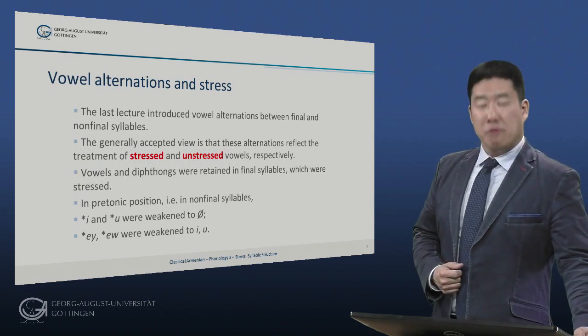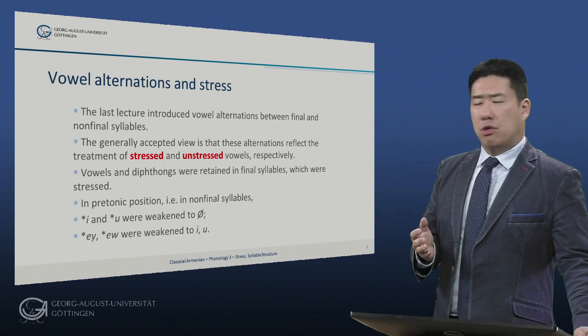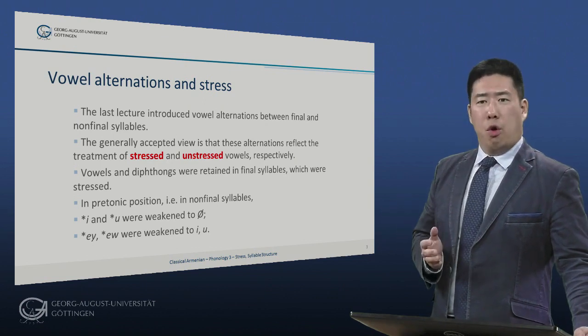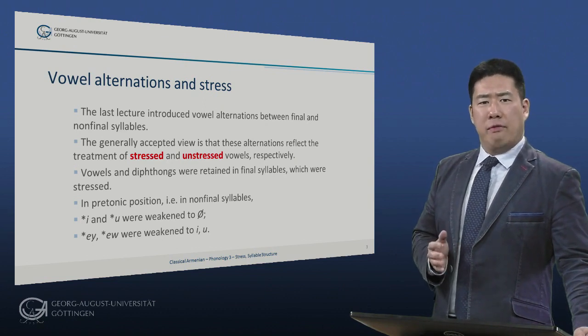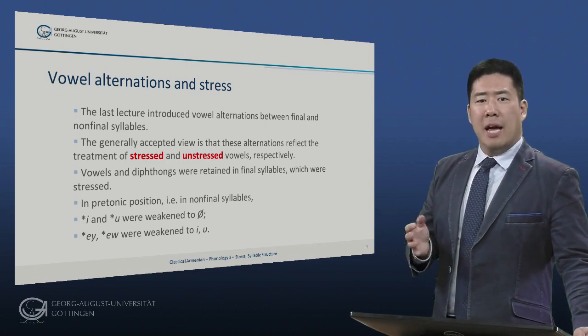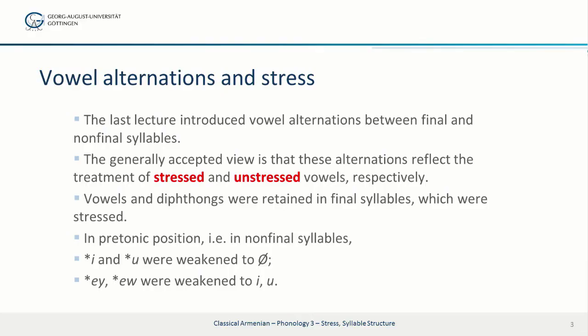The last lecture introduced vowel alternations between final and non-final syllables, which play such an important role in classical Armenian. The generally accepted view is that these alternations reflect the treatment of stressed and unstressed vowels respectively. Vowels and diphthongs were retained in final syllables, which were stressed. But in pre-tonic position — before the stress, meaning in non-final syllables — i and u were weakened to zero, and the diphthongs ei and eiu were weakened to i and u respectively.